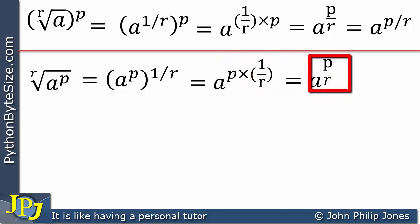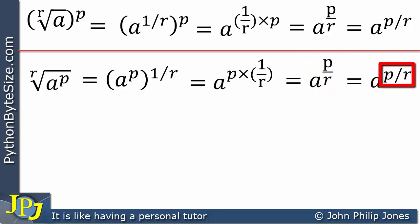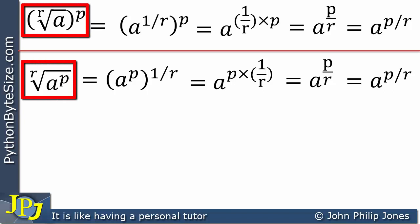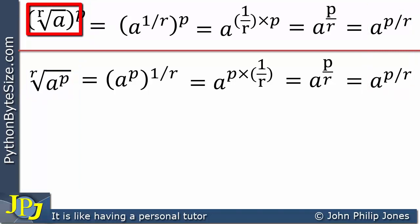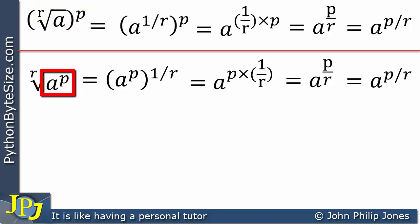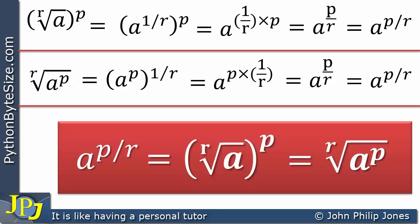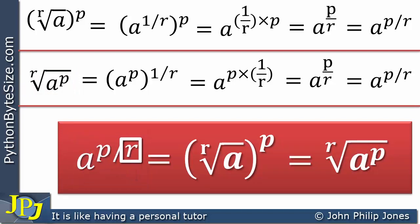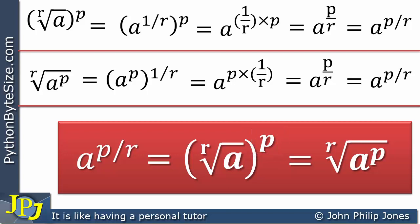This gives us a raised to p divided by r, which we can also write with p over r as the exponent. It is worth noting that these two expressions look different: in one you take the root first and then raise to the power, while in the other you raise to the power first and then take the root. However, applying the law of indices, you end up with the same answer in both cases.